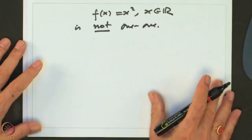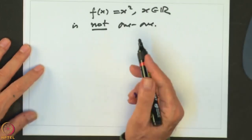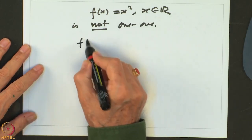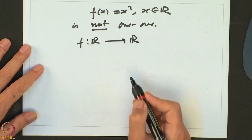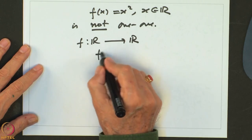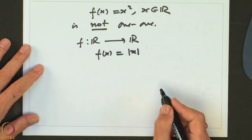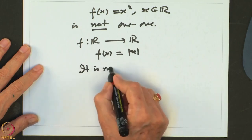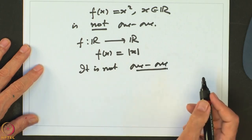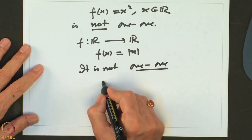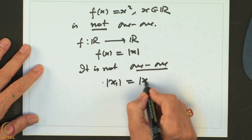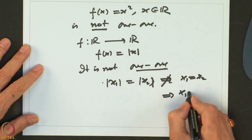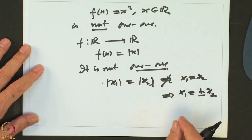So F(X) = X squared for X belonging to R is not a 1-1 function. Similarly, F(X) = mod X is also not 1-1, because mod(X1) = mod(X2) only implies X1 = plus or minus X2, not necessarily X1 = X2.